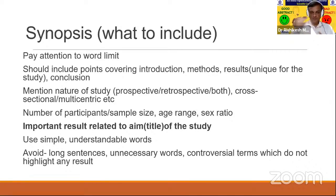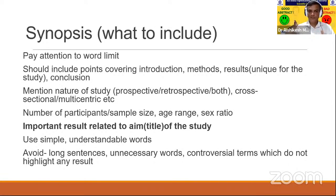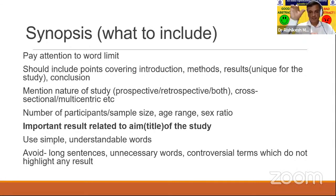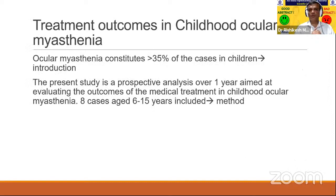The second part is the synopsis you will be submitting. For conferences like AIOS, you don't need separate headings like introduction, methods, results — simply put it in a single paragraph. But for something like the World Society for Pediatric Ophthalmology and Strabismus, WSPOS, structured headings are required. Mention the nature of the study — prospective or retrospective — the number of participants, and important results related to the aim. The aim and the important results should be in sync, not separate. Use simple understandable words, avoid long sentences, and fit everything within the word limit.